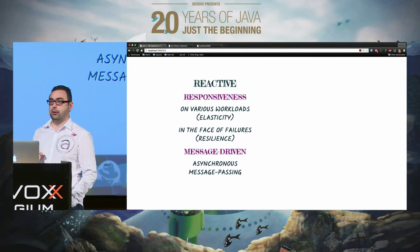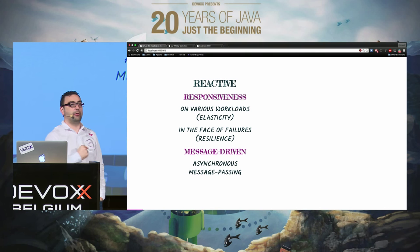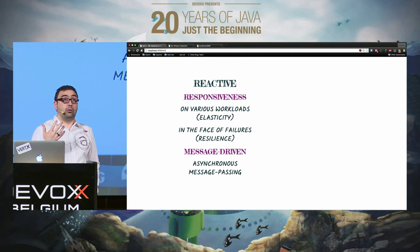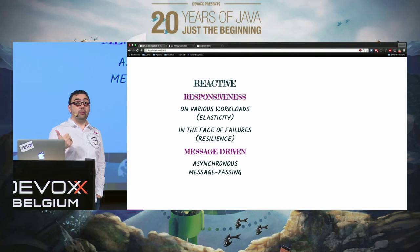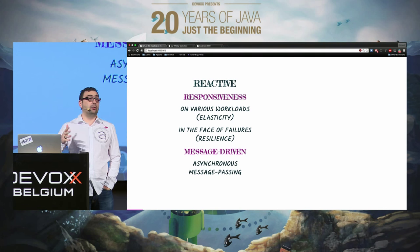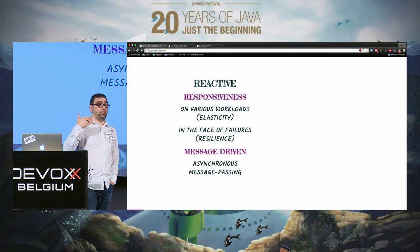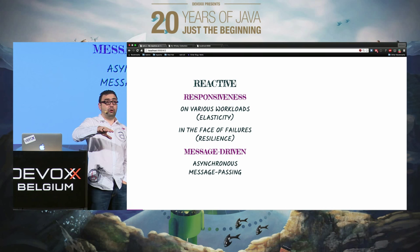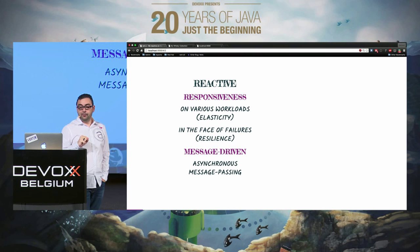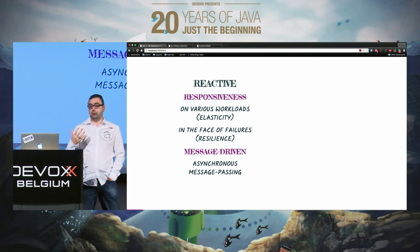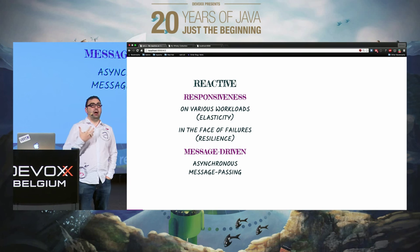Whether acceptable means a couple of seconds or just milliseconds is up to you to define. The system needs to be responsive on various workloads — one user at a time or one million users. And the second pillar: it still needs to be responsive even if there's an earthquake and everything crashes. Asynchronous, message-driven message passing is the best way to achieve this.